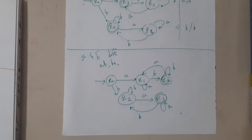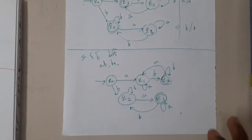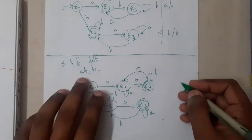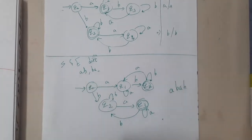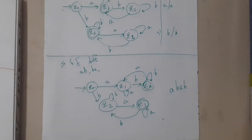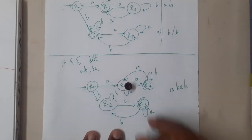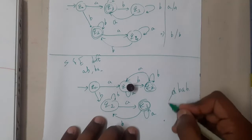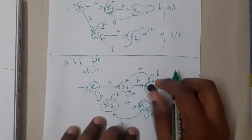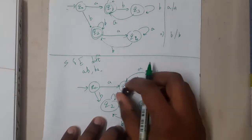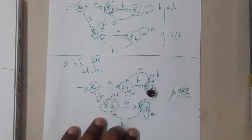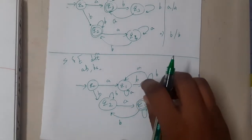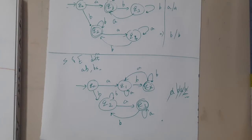Whenever you have any doubt, check based on some examples. Take the string 'abab' — starting and ending with different symbols. Start at q0, get 'a' and come here, get 'b' and come here, get 'a' and come back, get 'b' and come back — this is accepted as we are in the final state.